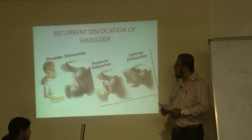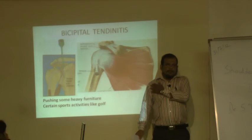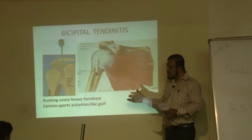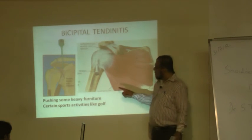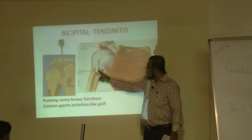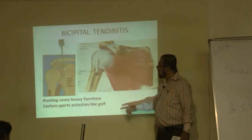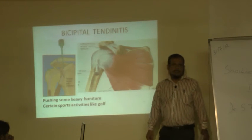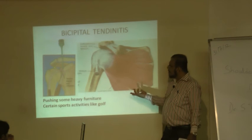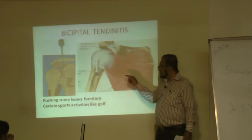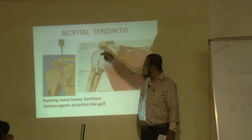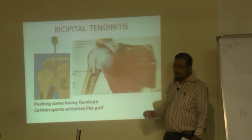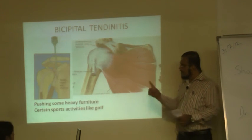Next is bicipital tendinitis. We all have the biceps tendon, which people try to develop in gyms. Pulling heavy furniture or lifting something can stretch this muscle. The biceps tendon goes to a small groove in the arm bone and gets attached to the shoulder with little space to move. It causes a lot of pain, and many physicians call it frozen shoulder, but it must be correctly diagnosed. The best treatment is to put a thin needle behind the tendon into the bone and give a little steroid and a local drug — the patient immediately recovers.